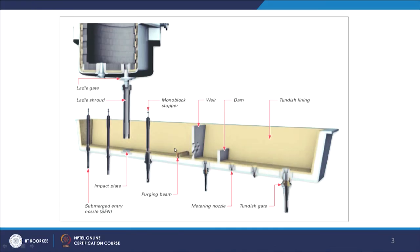You may also have the use of a turbo stop, normally used in tundish, placed just at the point where the liquid metal stream hits the tundish bottom. From there you have the submerged entry nozzle going into the mold. These are the different types of components in a typical tundish.